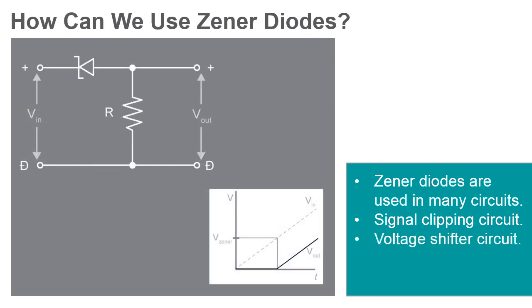Next, a voltage shifter. A Zener diode can be incorporated into a circuit with a resistor to work as a voltage shifter. This circuit will lower the input voltage by the amount equal to the Zener's breakdown voltage.